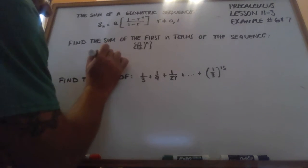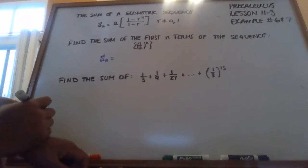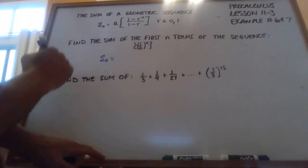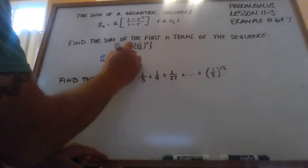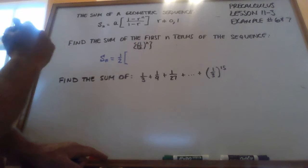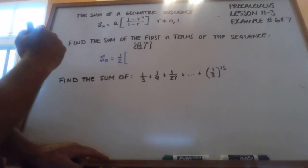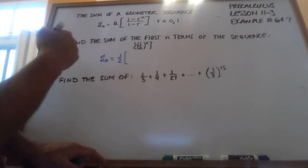So that means that S sub n is going to be a, which is the first term. So if I plug 1 in here, 1 half to the first power is 1 half. So a is 1 half. My common ratio is also going to be 1 half, because it's going to be 1 half times 1 half times 1 half each time.